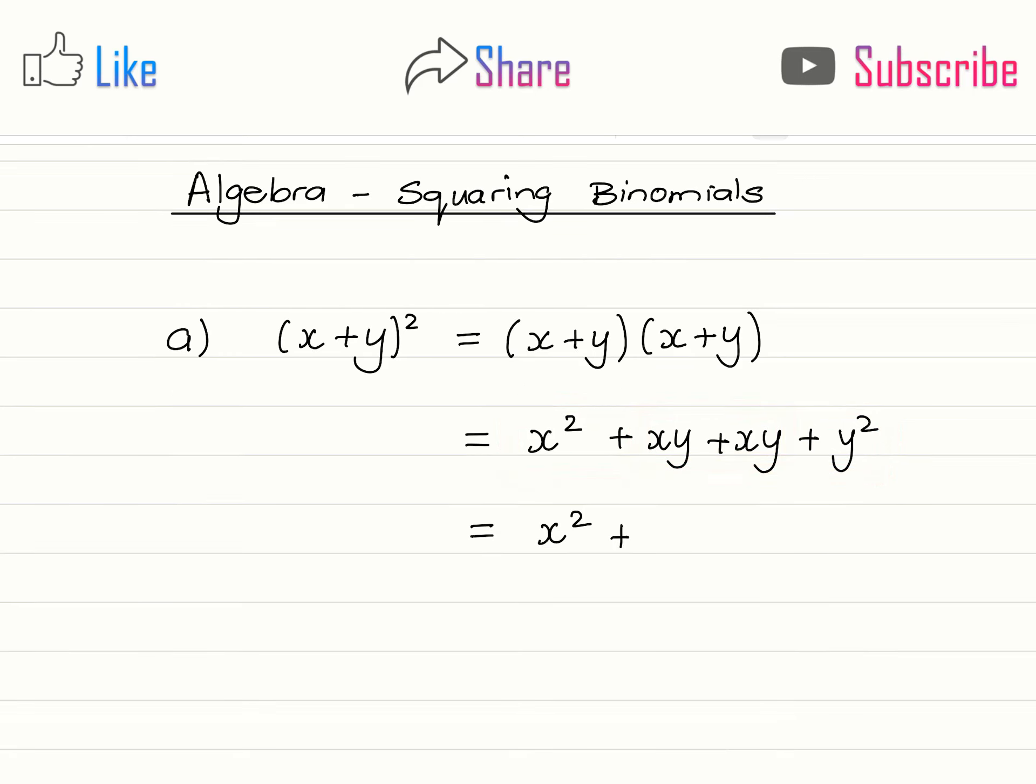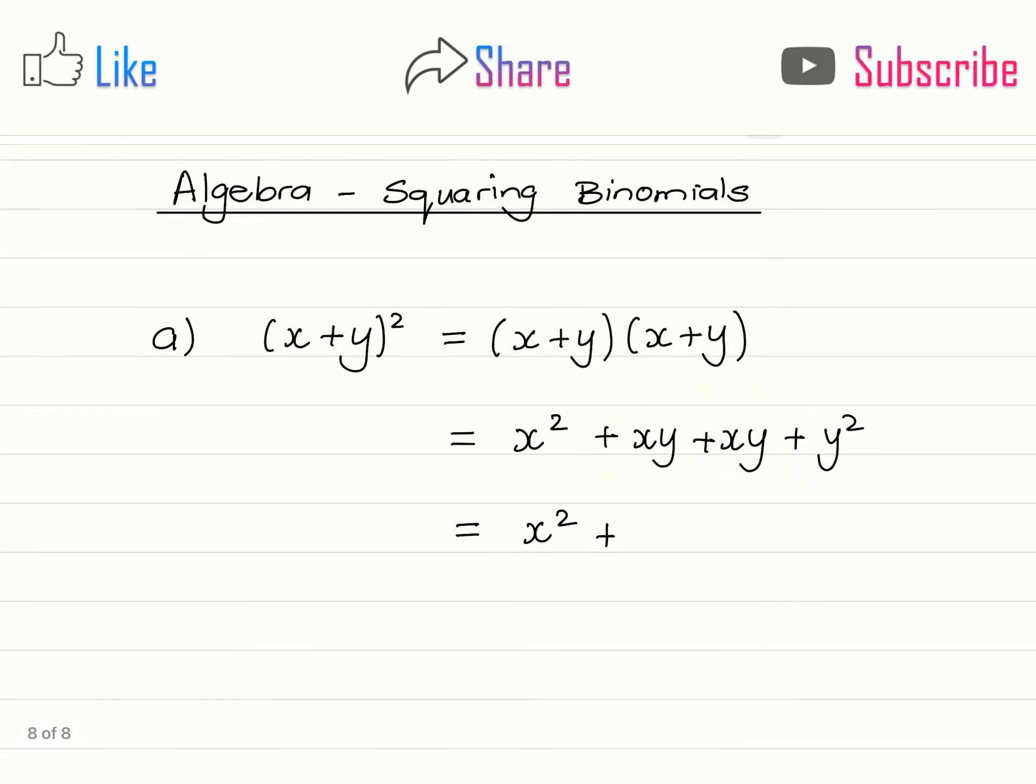And as we learned in the previous video we can add up like terms, and in this case the like terms give us 2xy. So the final answer is x squared plus 2xy plus y squared.